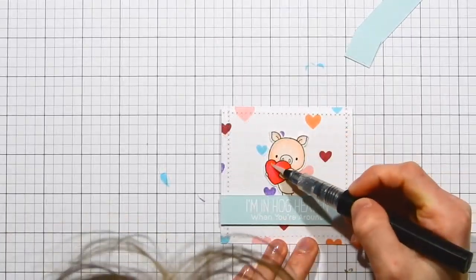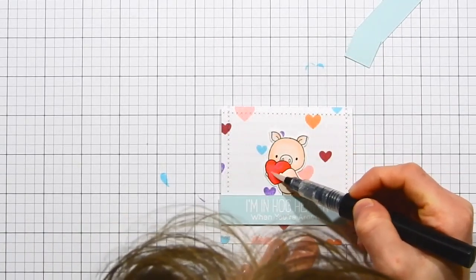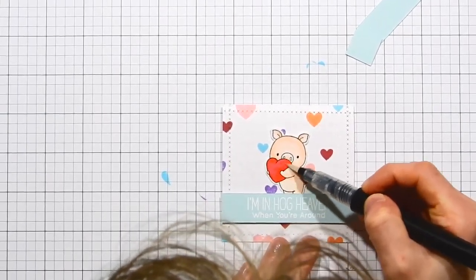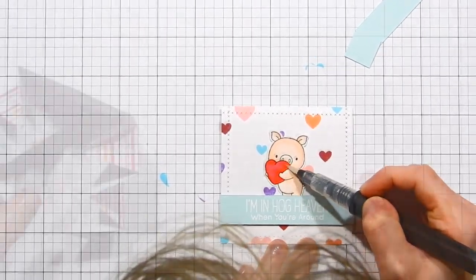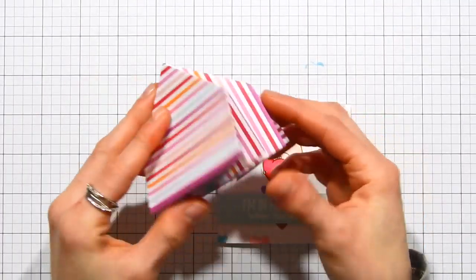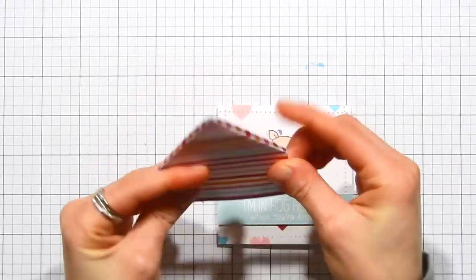Finally, I added some sparkle and shine using the Spectrum Noir shimmer pen. This just adds a nice bit of shimmer and shine to the heart. Now it's time to put the entire card together. We've got our little pop-up element here, and we're going to now layer this inside of our card.